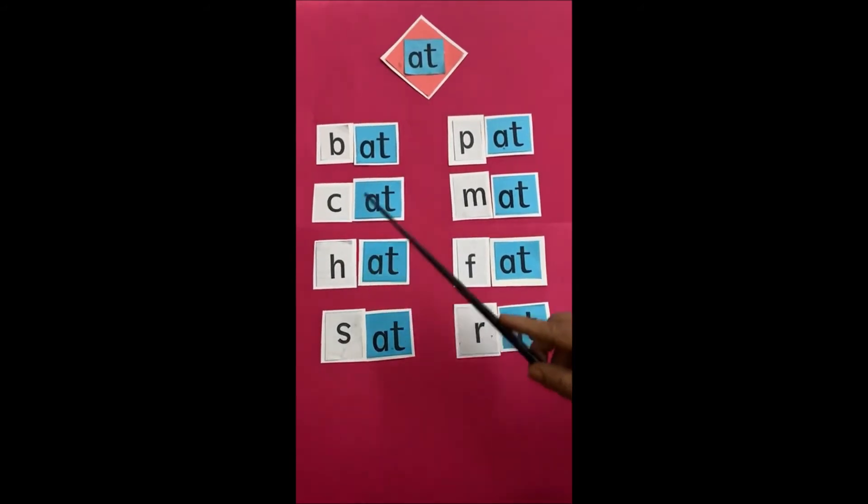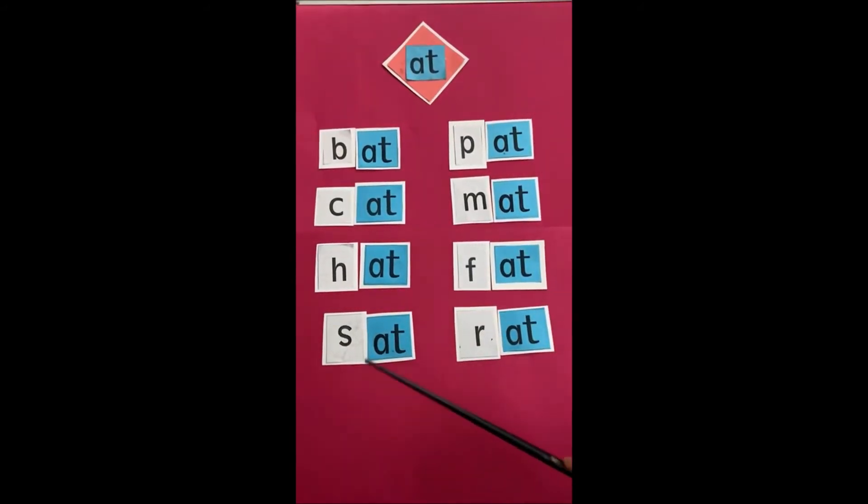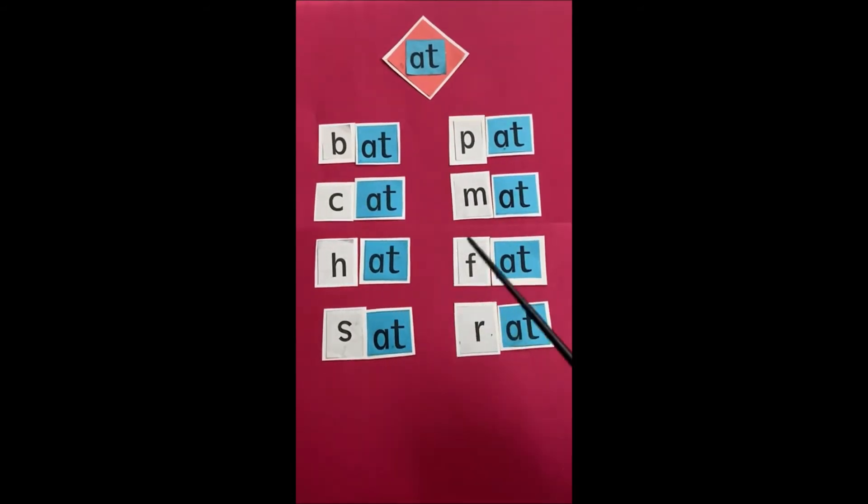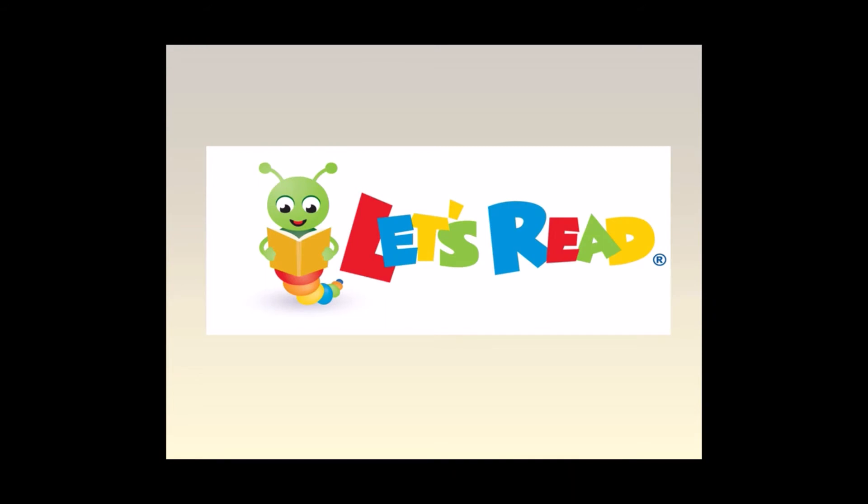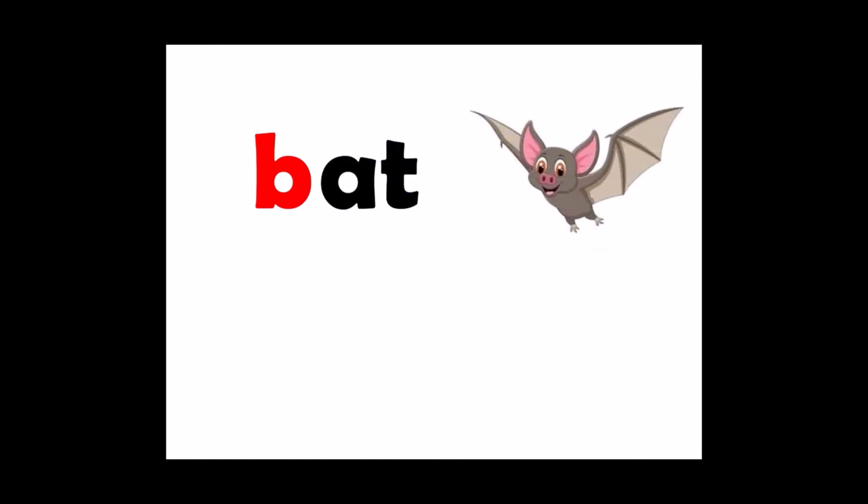And now, we will read these words again and see their pictures too. So get ready. Let's read. B at bat. Comes the bat flying. And a bat for you to play.